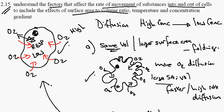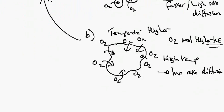Return to the syllabus statement. We've done surface area to volume ratios, we've done temperature, and now we're going to look at the final element which is concentration gradient.